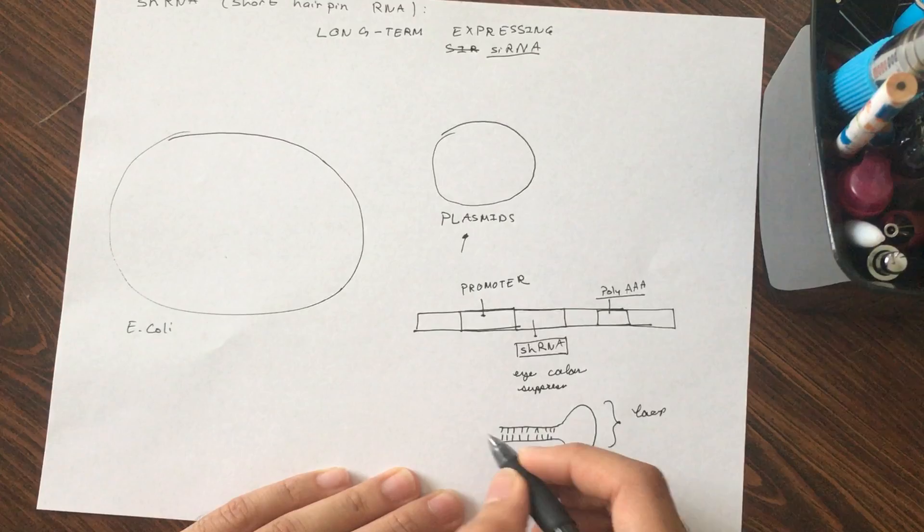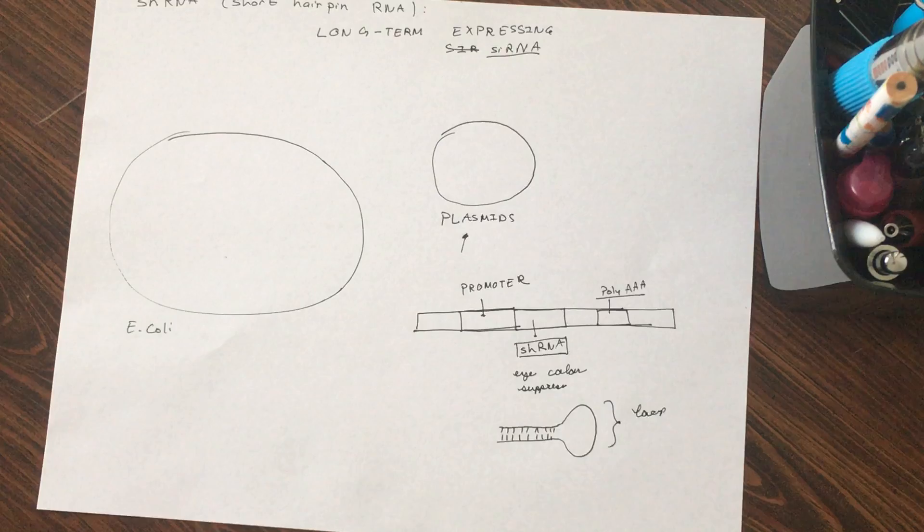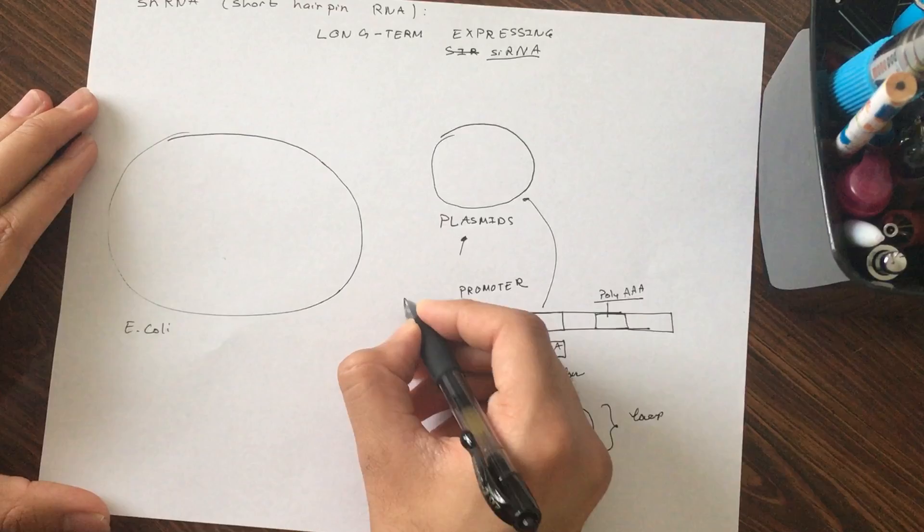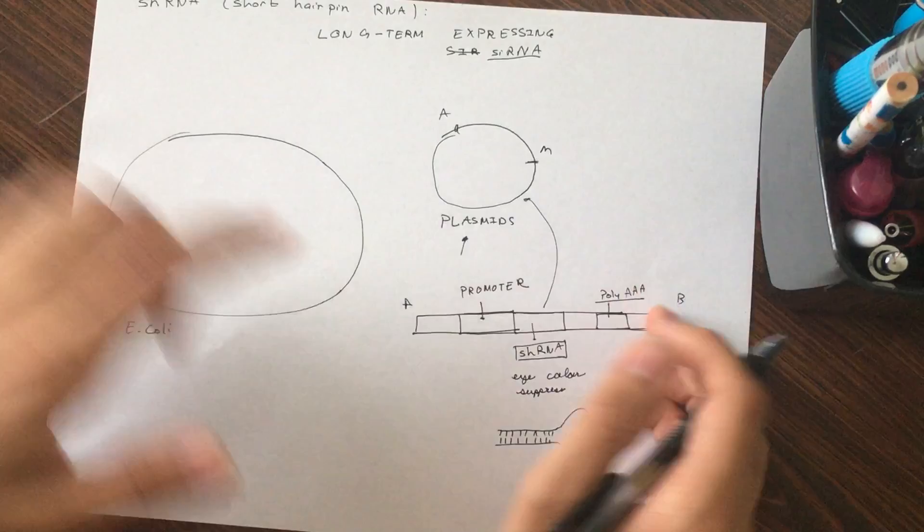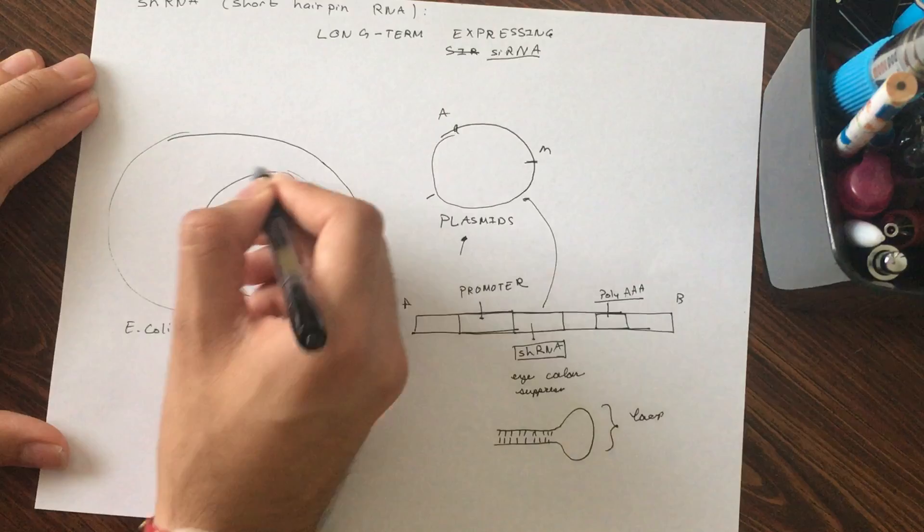So we want to know how this shRNA processes into siRNAs. Well, the first thing that we know is that these plasmids - so this is actually located on here. So if we just mark this A, mark this B - so this thing lies between A and B.